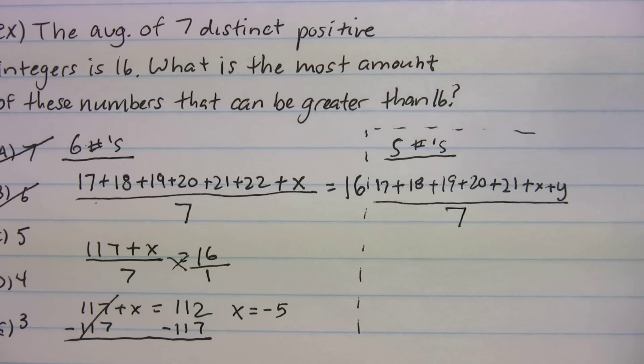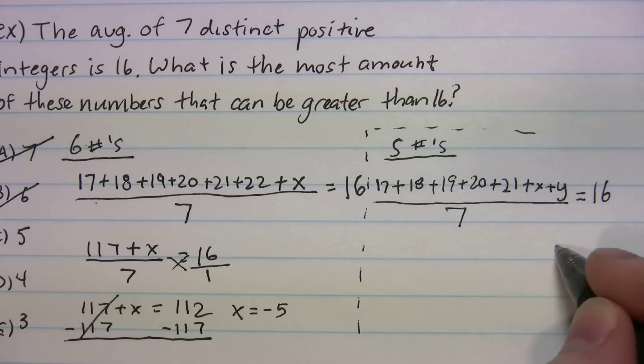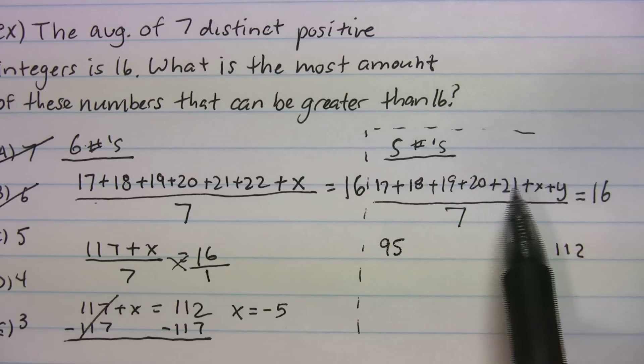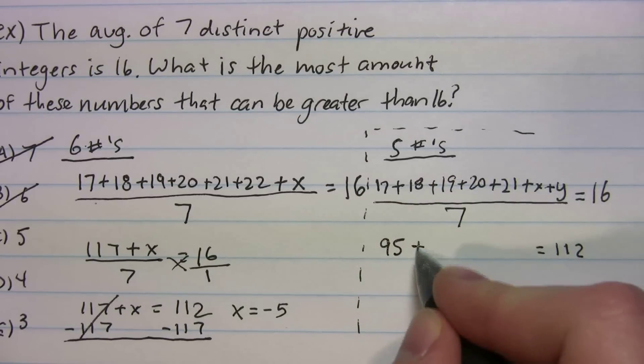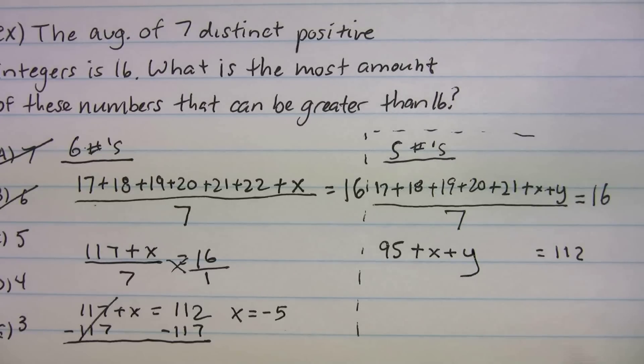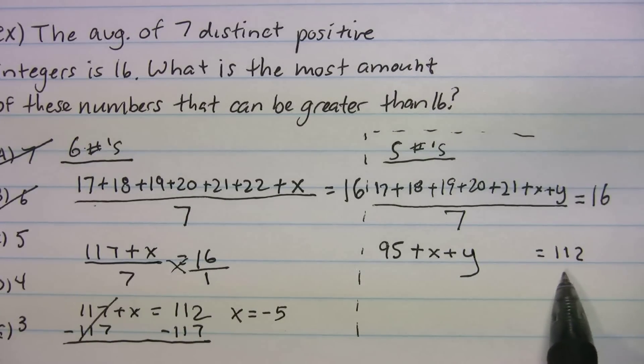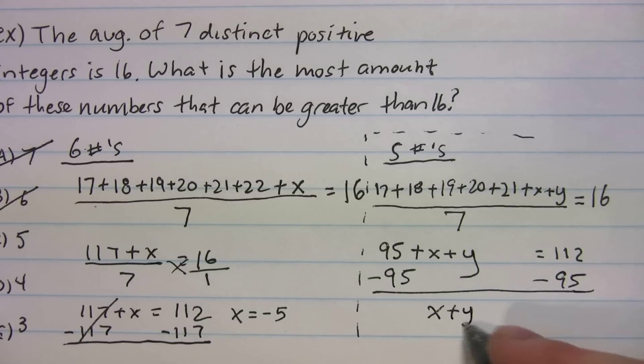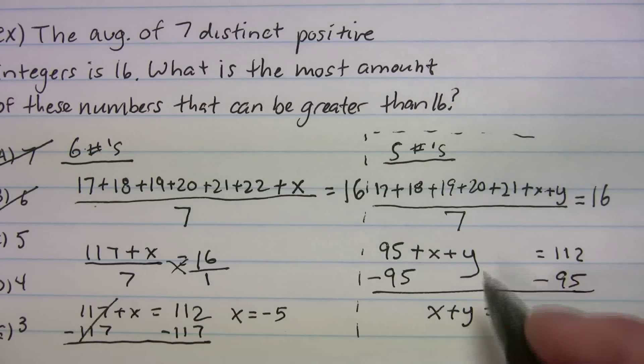What are we dividing by? We're dividing by seven. And our average is still going to be 16. So again, from before we found out that seven times 16, we got 112, right? So now we just got to add up 17 plus 18 plus 19 plus 20 plus 21 equals, and you should get 95. All I did was I added up all this stuff up here. That's 95 plus x plus y, and that whole thing equals 112. That's minus the 95, and we should get x plus y is equal to 112 minus 95, and we get 17.